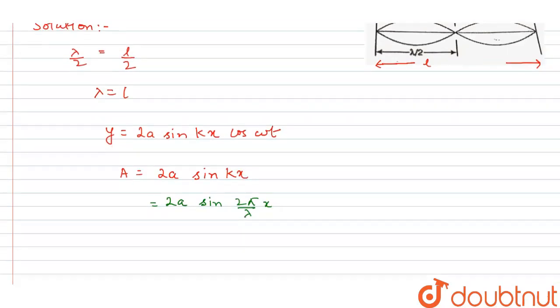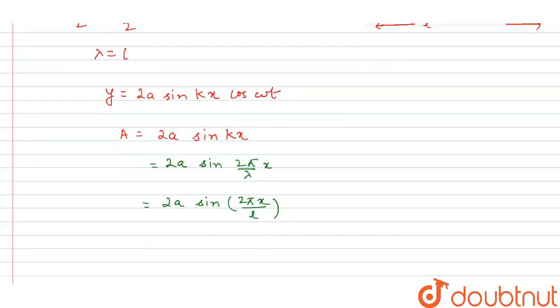So value of k will be 2 pi by lambda. The amplitude will be equal to 2A sin 2 pi lambda into x, and we know that lambda equals L, so amplitude equals 2A sin 2 pi x by L.